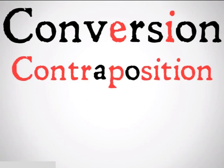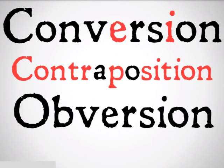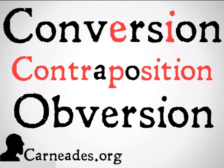That was contraposition — that's only going to be valid for A and O. Illicit contraposition is when you try to do that for E and I; check that out in Fallacy February. Next up, we're going to be doing conversion, which is valid for all four versions of categorical propositions. Watch a new video every single day for 100 days here at carnadies.org. And stay skeptical, everybody.